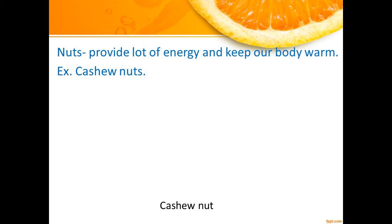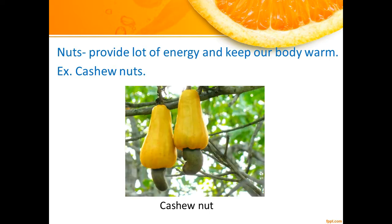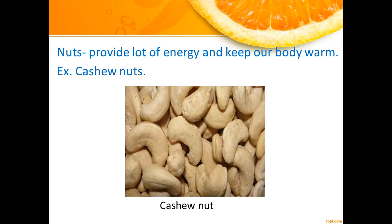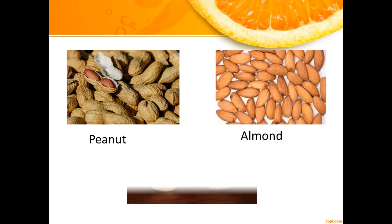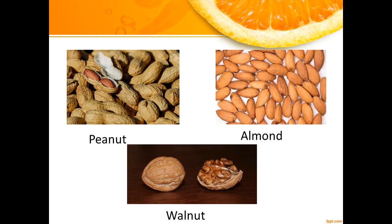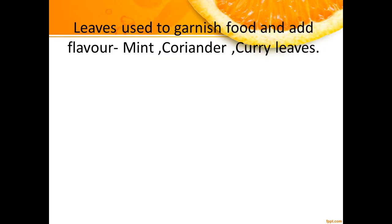The next seeds of plants are nuts. Nuts provide a lot of energy and keep our body warm during the winter season — like cashew nuts, peanuts, almonds, and walnuts. These are some of the seeds of plants we eat. Now let's know about some leaves of plants which we use to garnish food and add flavor.